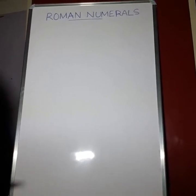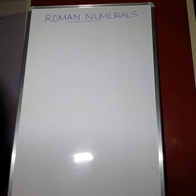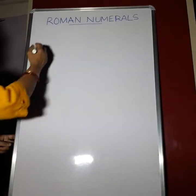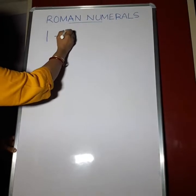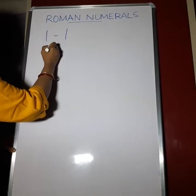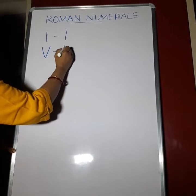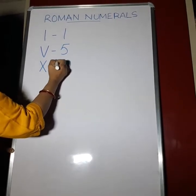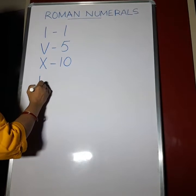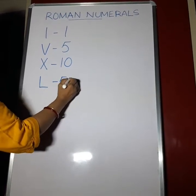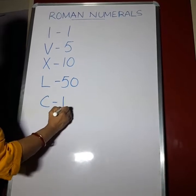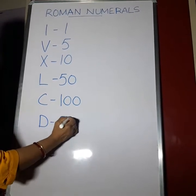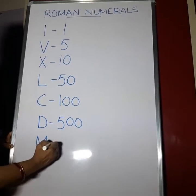We have 7 basic symbols for writing Roman numbers. These 7 symbols are 7 letters of the English alphabet. I stands for 1, V stands for 5, X stands for 10, L stands for 50, C stands for 100, D stands for 500, and M stands for 1000.